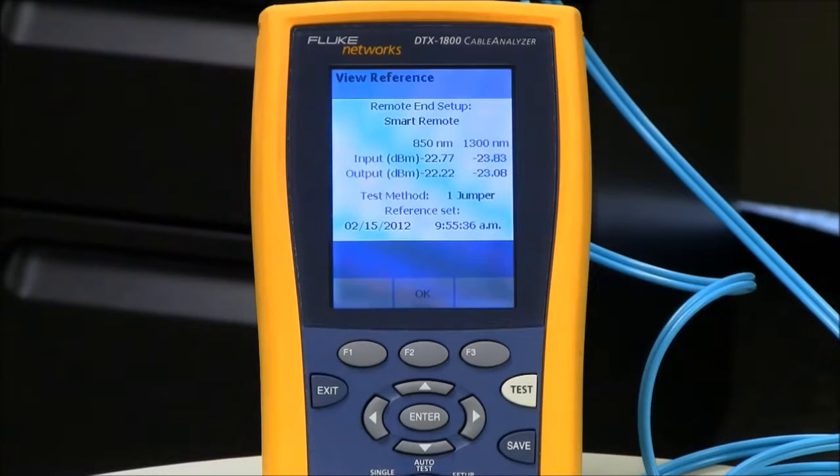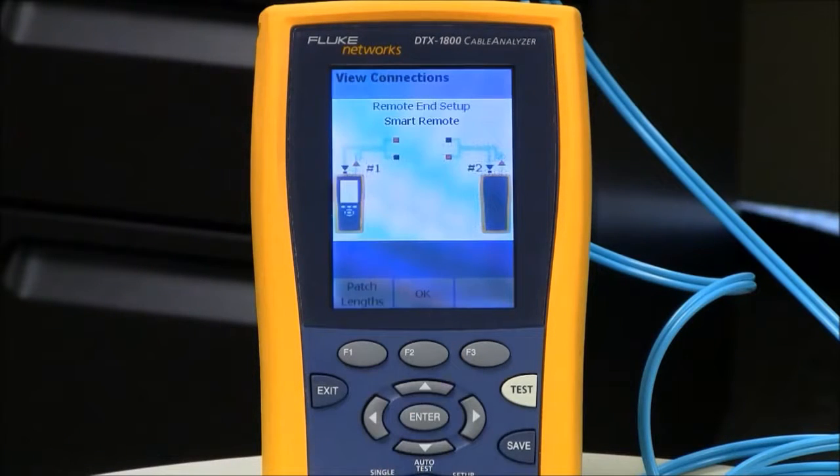And it's going to come back with some loss values. And as a guide, if it's 50 micron, we want this better than minus 24 and a half dBm. If it's 62 and a half micron, we want it better than minus 20 dBm. And if it's 9 micron, we want it better than minus 8 dBm. That doesn't mean to say that our test reference cords are in good condition. We're going to be doing a check a little bit later on to make sure they're in good condition. So everything looks fine there. I'm going to hit the F2 OK key.